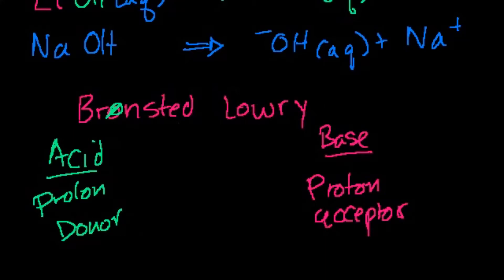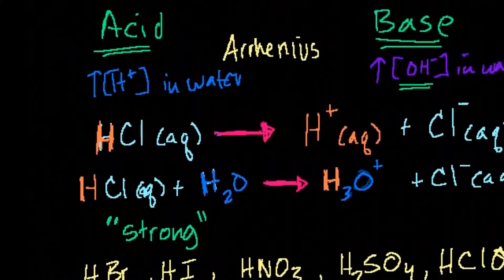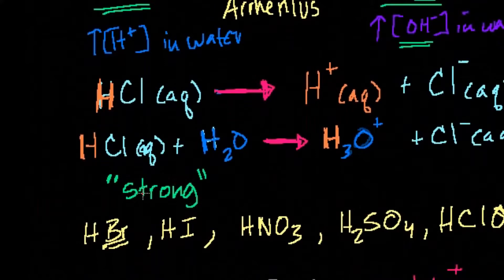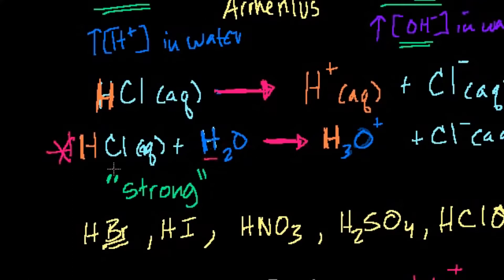Let's look at this in context. By the Brønsted-Lowry definition, a proton donor here would be hydrochloric acid — it's donating a proton to this water molecule. A hydrogen atom is essentially just a proton, because if you get rid of its electron, it has no neutron; it's just a proton in space. So hydrochloric acid donates a proton to water to make hydronium — it is a Brønsted-Lowry acid, just as it is an Arrhenius acid.